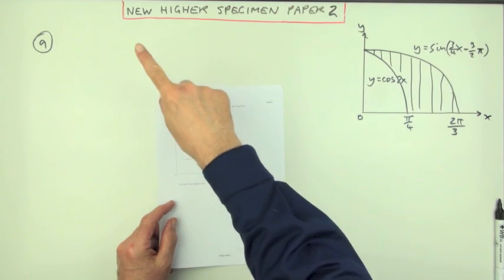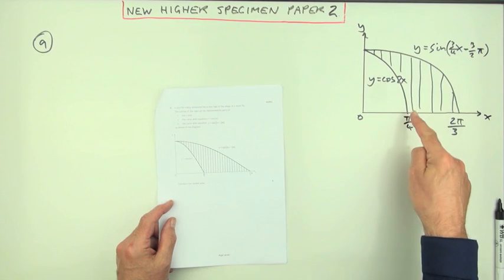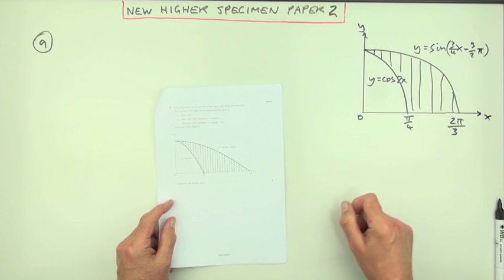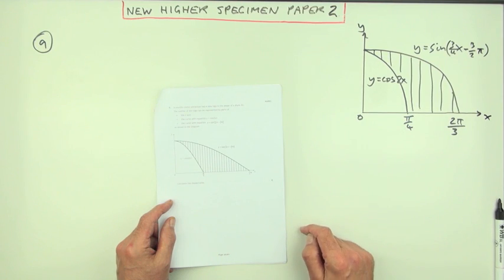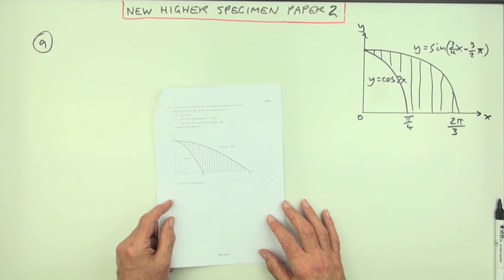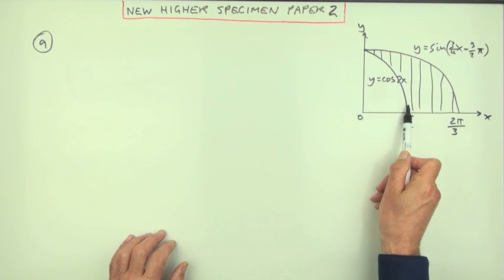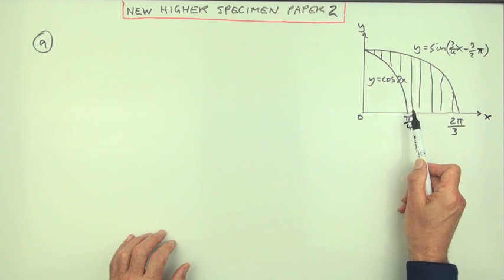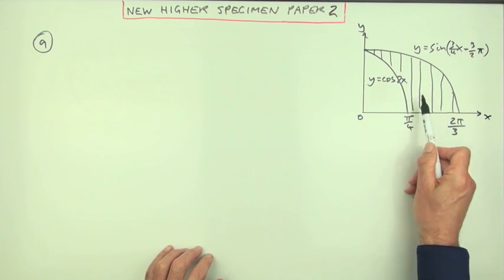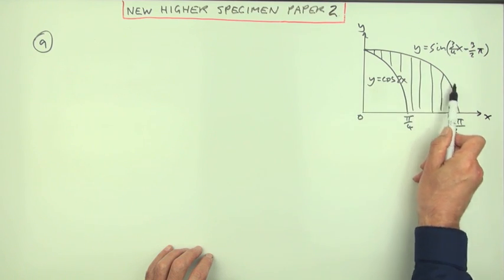Number nine from the specimen paper for the new Higher, paper two — it's the area under curves. It looks like the area between two curves, but not strictly so, because this lower curve finishes before the end of the area. You have to consider the best way to get that shaded portion. The two curves are trigonometrical ones. It's best to look at it as the big chunk take away the small chunk, so: what's the area under this function?